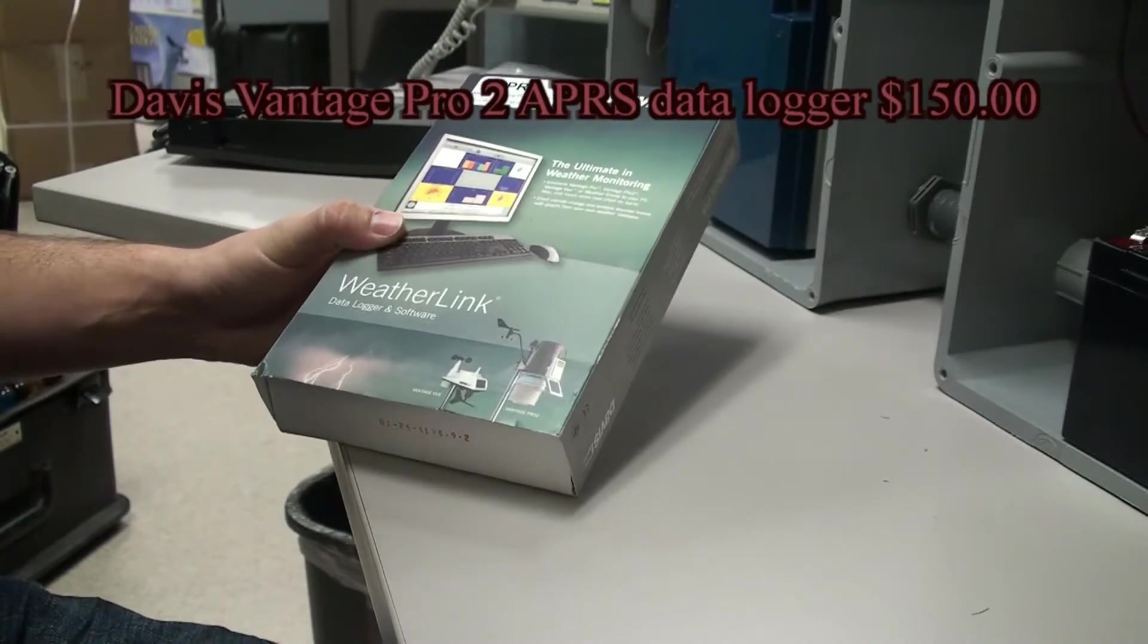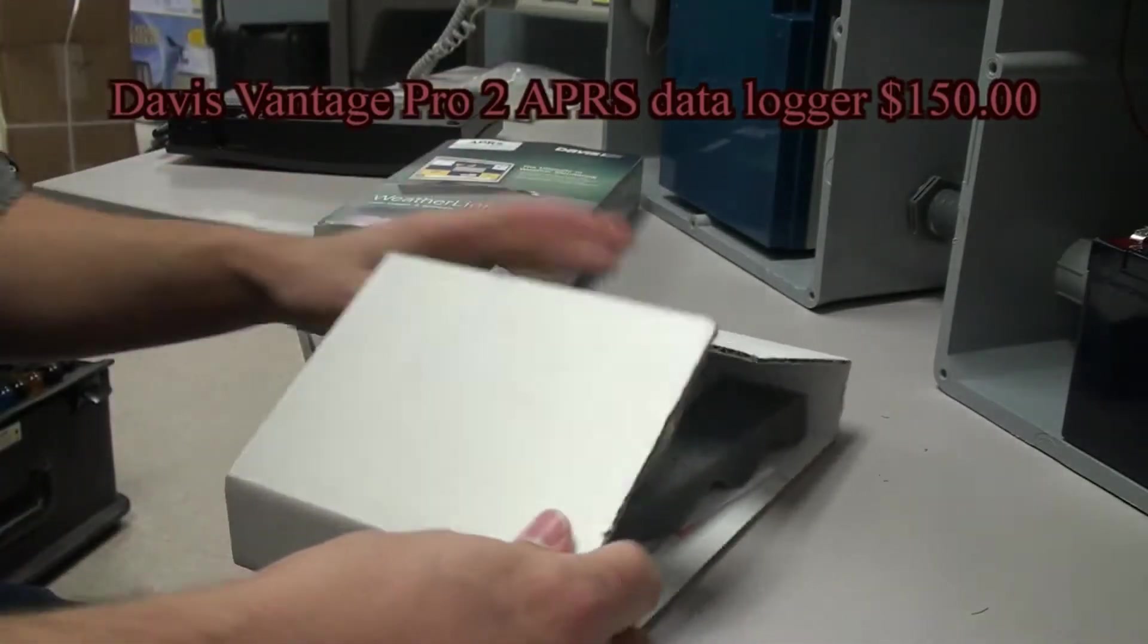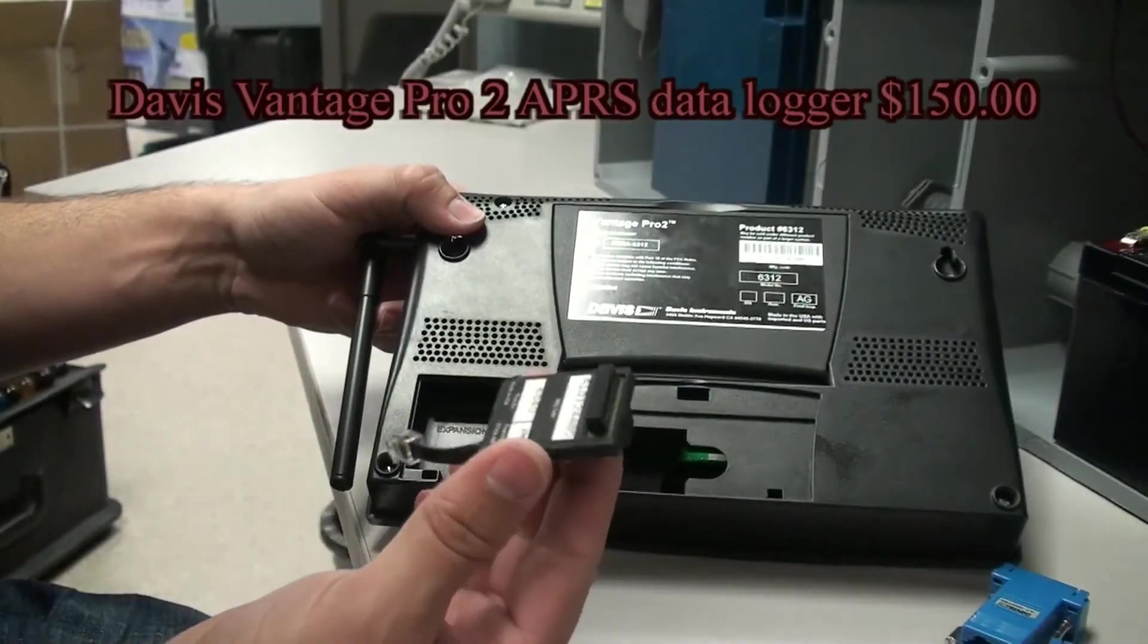The weatherlink APRS data logger will enable us to take the information from the weather console and push it into the TNC.